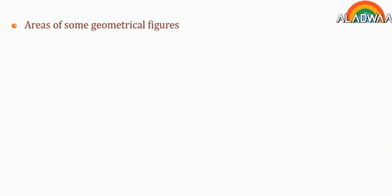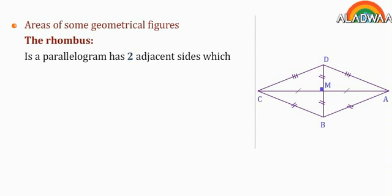Lesson 3: Areas of some geometrical figures. The rhombus is a parallelogram that has two adjacent sides which are equal.